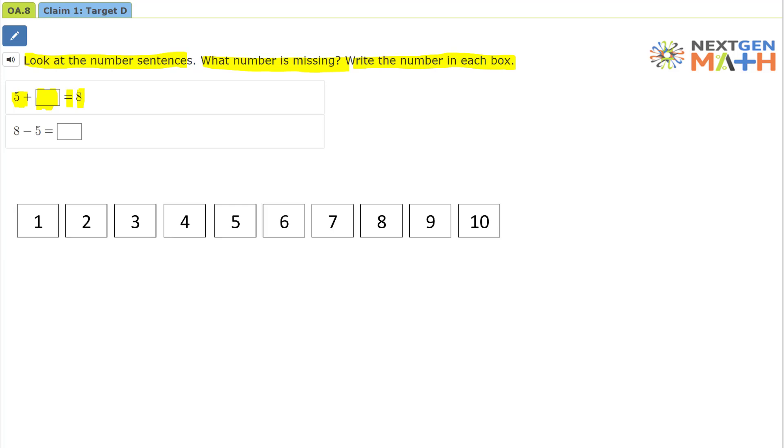Well, let's look at our open number line to help us solve the problem. So we're first going to show 5. 1, 2, 3, 4, 5. There is 5 on our open number line.